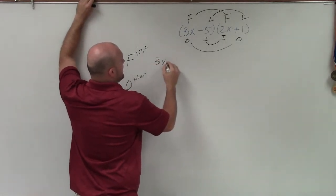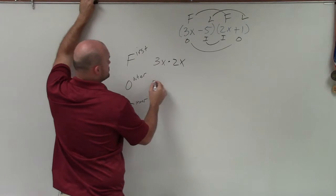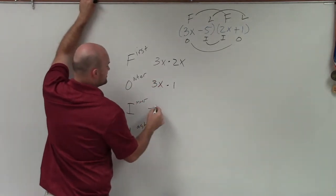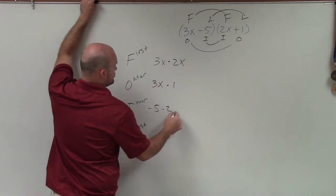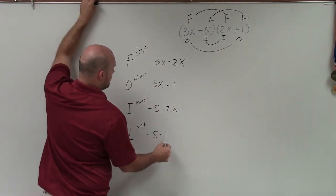So now what I'm going to do is just do 3x times 2x. Then I do go look for my o's, which is 3x times 1. Then I do my inner, which is negative 5 times 2x. And then my last, which is negative 5 times 1.